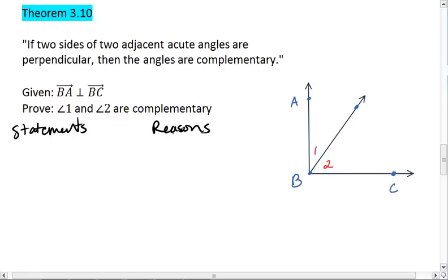So we have our statements and our reasons. We know that BA is perpendicular to BC, and that is a given.